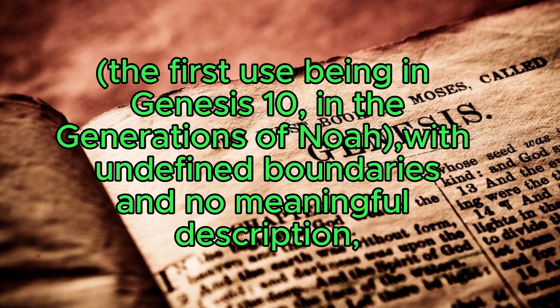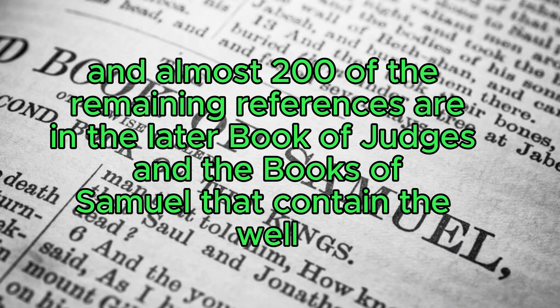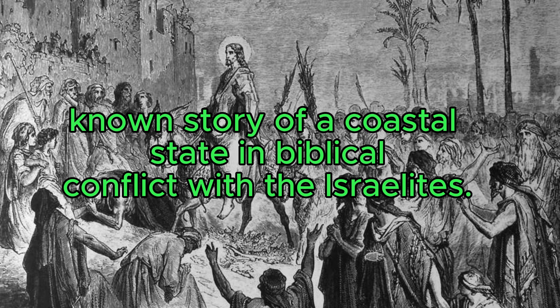The first use is in Genesis 10, in the generations of Noah, with undefined boundaries and no meaningful description. Almost 200 of the remaining references are in the later Book of Judges and the Books of Samuel, which contain the well-known story of a coastal state in biblical conflict with the Israelites.